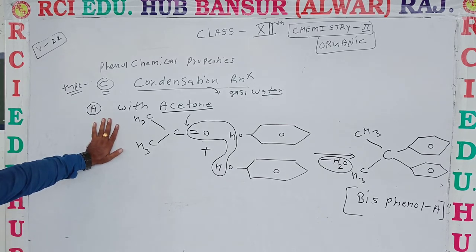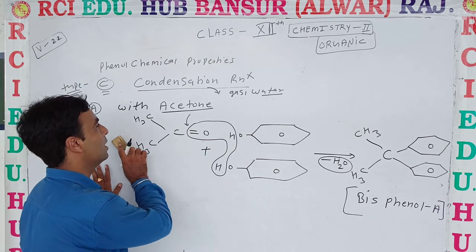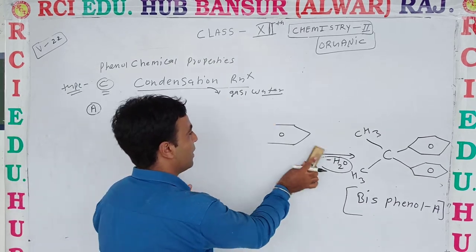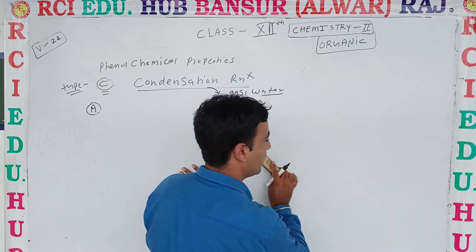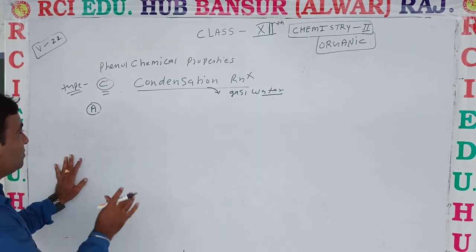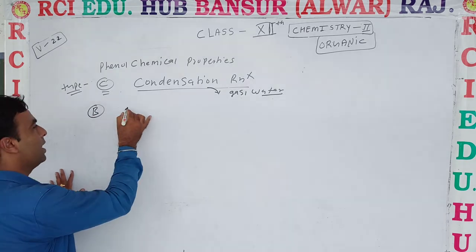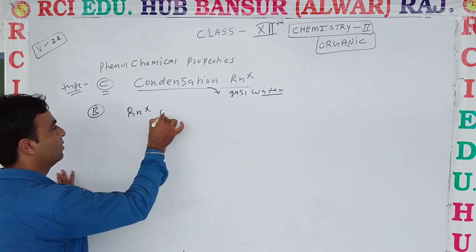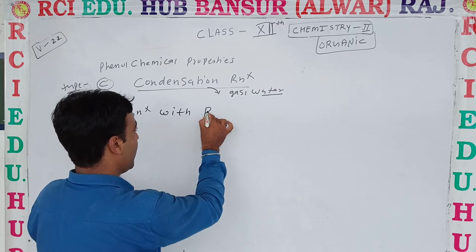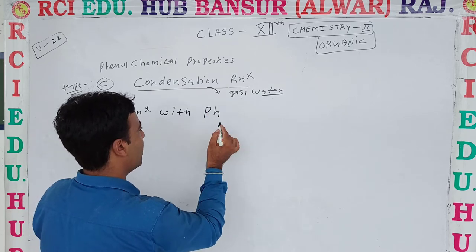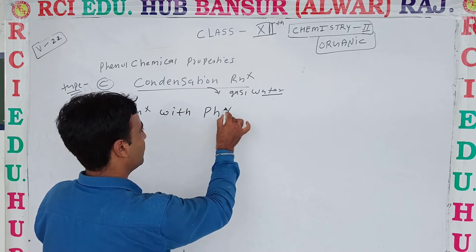Next, we see the next reaction in this part — condensation reaction: reaction with a diazonium salt. With what will this reaction be carried out? The next reaction here is reaction with diazonium salt.